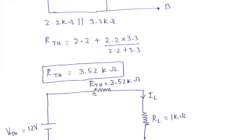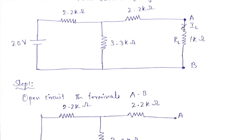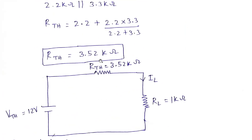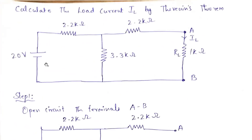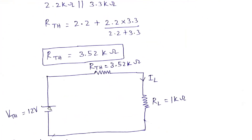Now we have found VTH and RTH. The load resistance, which was open-circuited earlier, is now added back in series. You also need to observe the polarity of the original voltage source — positive and negative terminals — and replicate the same polarity for VTH in the equivalent circuit. If the original polarity is reversed, connect VTH in the opposite way as well. Whatever polarity is given in the circuit, use the same for VTH.